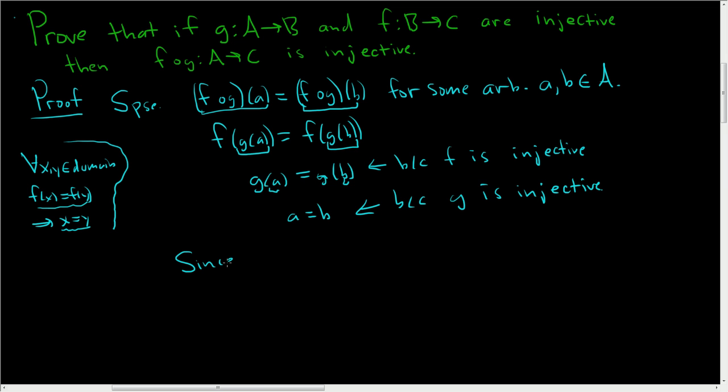Since little a and little b in capital A were arbitrary, this holds for all little a, little b inside capital A.